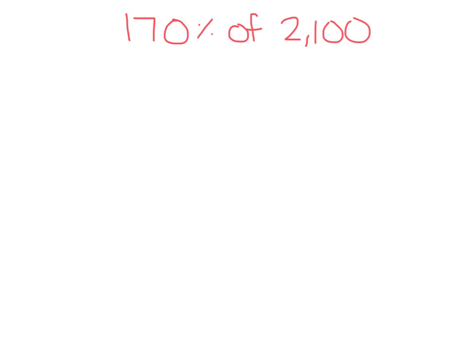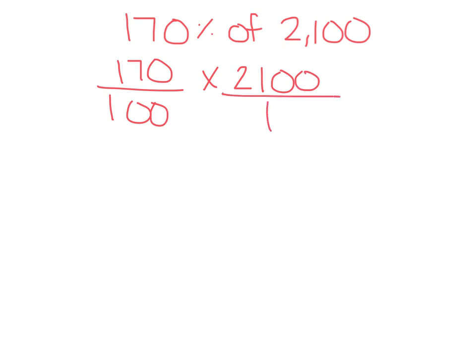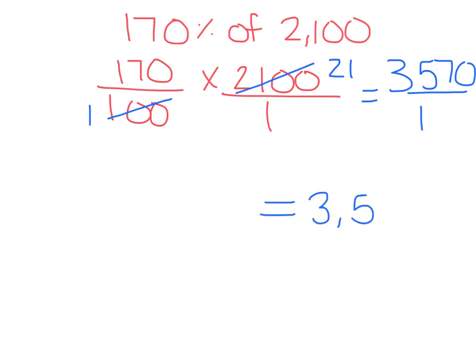For our last problem, we have 170% of 2100. Write them as a fraction: 170 over 100 times 2100 over 1. Cross simplify — divide both 100 and 2100 by 100: 100 divided by 100 is 1, and 2100 divided by 100 is 21. Now multiply across: 170 times 21 gives 3,570, and 1 times 1 is 1. So that simplifies to 3,570.